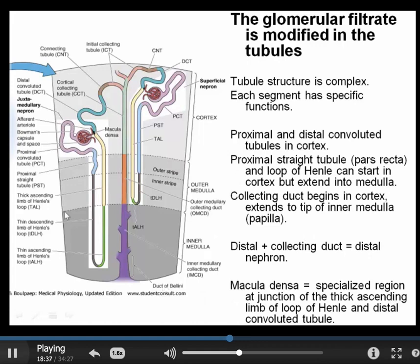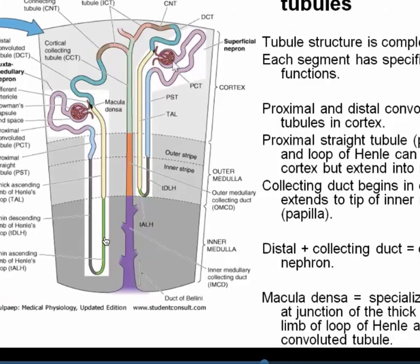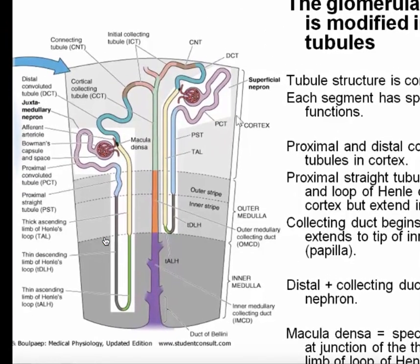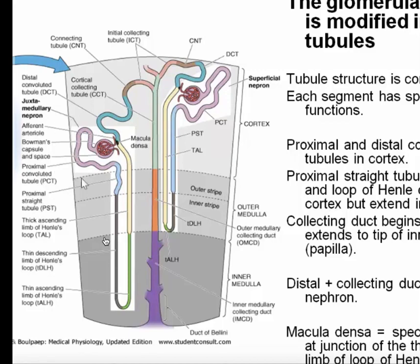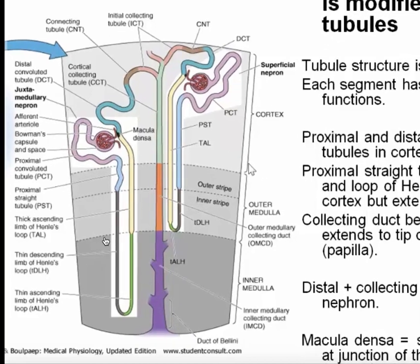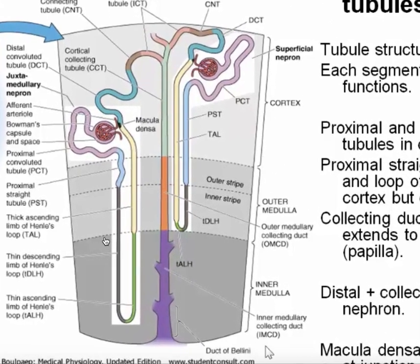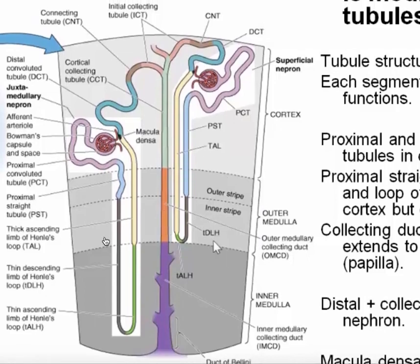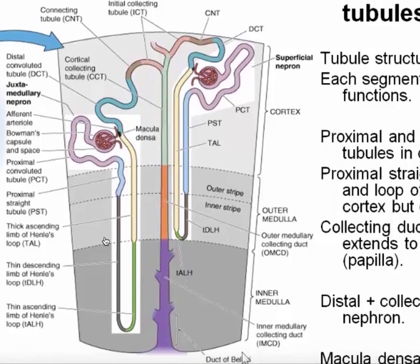Now we're going to look at the second set of structures in the kidney: the tubules, the epithelial tubules, which receive the filtrate and are responsible for modification of that filtrate, which eventually becomes the final urine. This is the cortex — the outer part of the kidney — and this is the medulla, the inner part. We routinely divide the medulla into an outer part and an inner part, and the inner medulla is sometimes called the papilla.